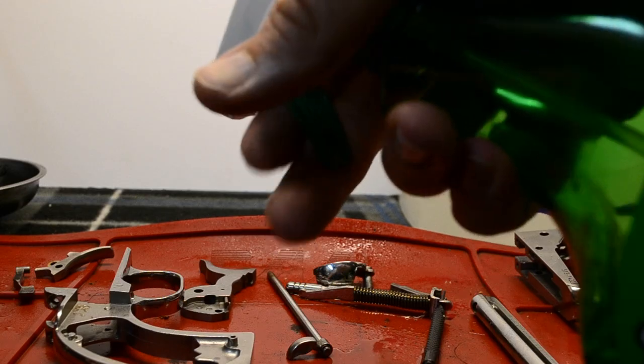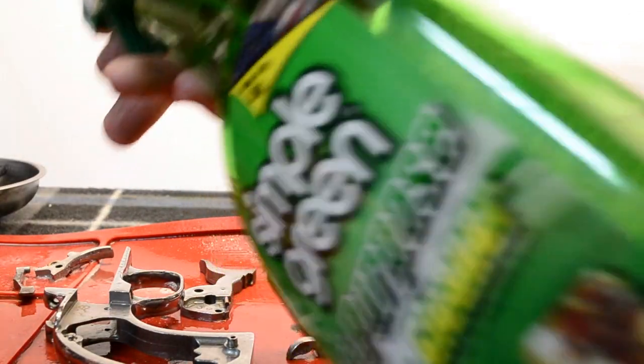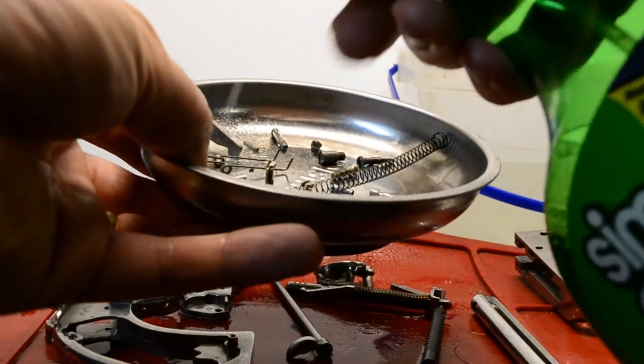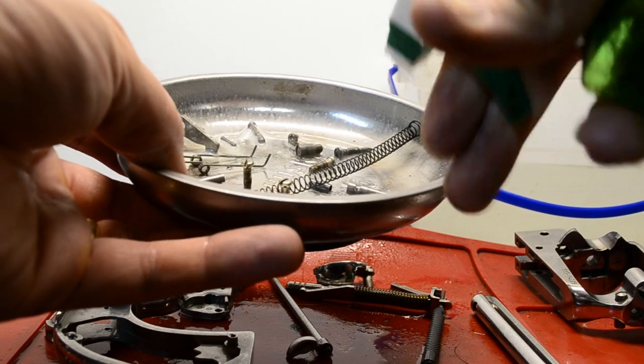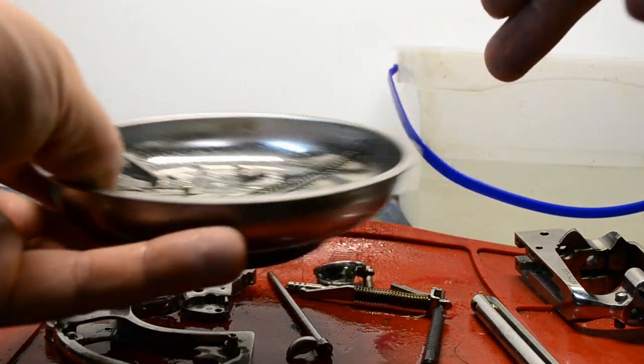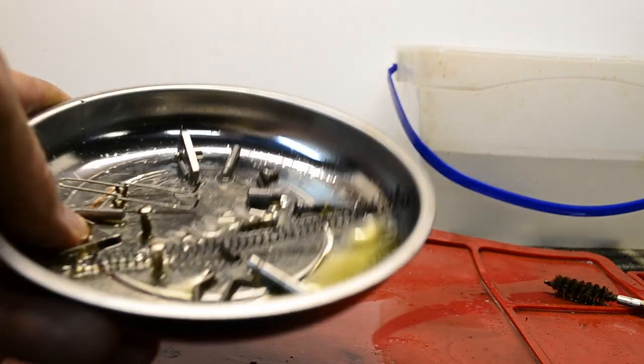Saturate each piece of the weapon with Simple Green until it is completely covered. Place all of the pieces that are extremely light or tiny into a small jar or magnetic plate. Saturate the container with Simple Green and then swirl the excess liquid around so that it covers all of the small parts.